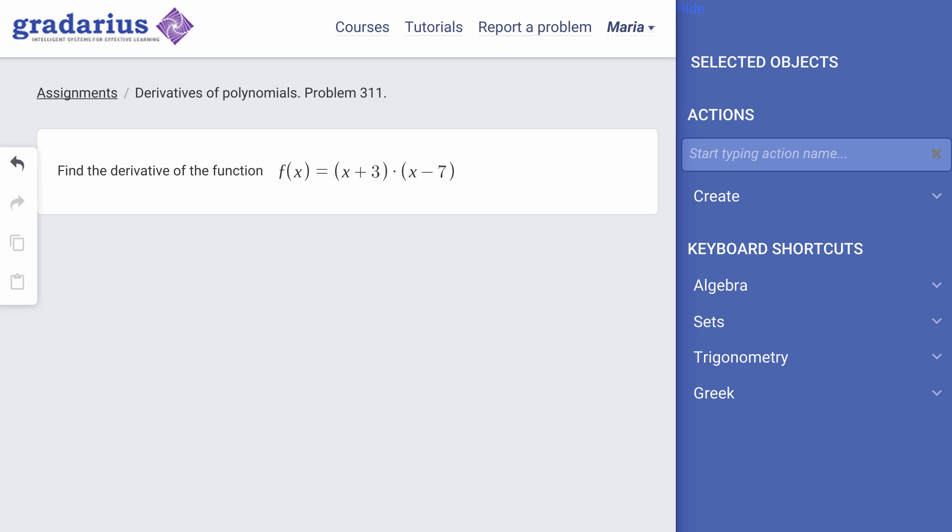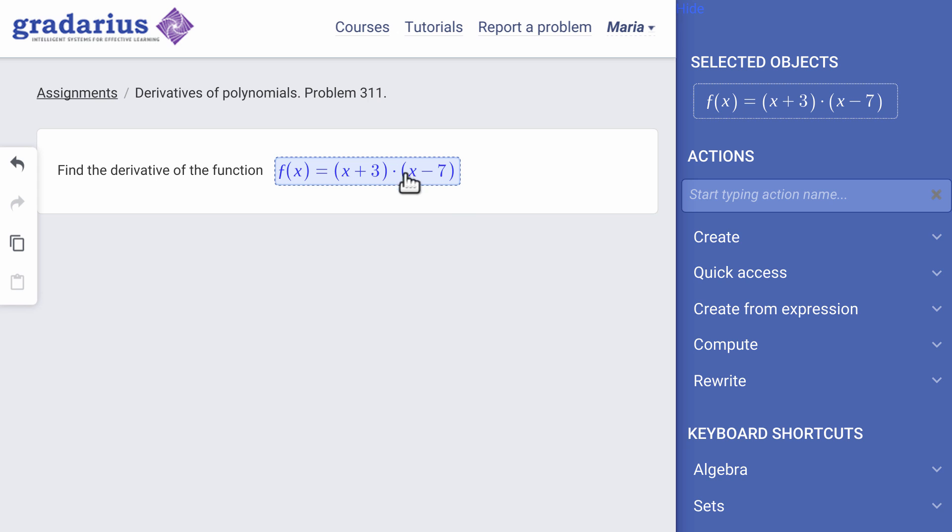Find the first derivative of x plus 3 times x minus 7. Maria starts by creating a derivative expression.